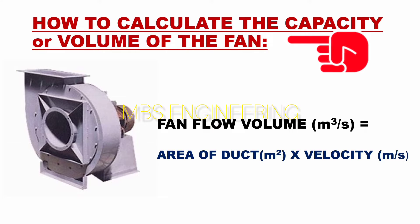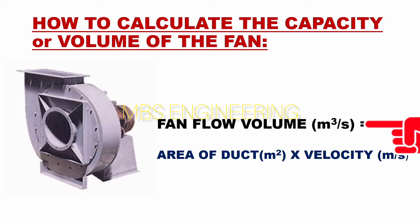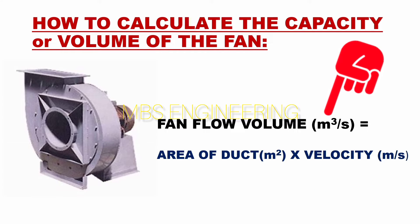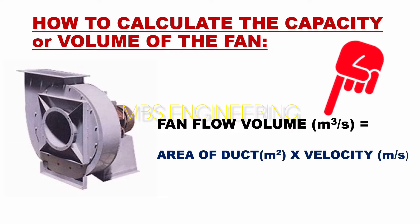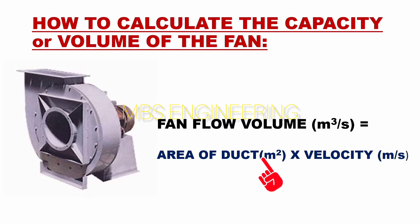We will discuss how to calculate the capacity or volume of the fan. The capacity or volume of the fan is equal to the velocity multiplied by the area. In this equation, the volume of the fan is in cubic meters per second, the velocity of the fan is in meters per second, and the area of the duct is in meters squared.